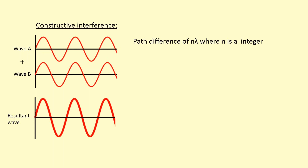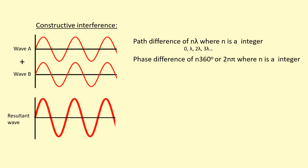Constructive interference normally happens when there's a path difference of a whole number of wavelengths — an integer number — for example, zero, one lambda, two lambda, three lambda. This leads to a phase difference of 360 degrees or a multiple of 360, or equivalently 2π or a multiple of 2π. So for example, 360, 720 — they're all in phase — or 0, 2π, 4π and so on.